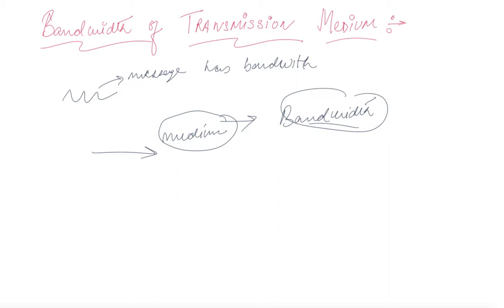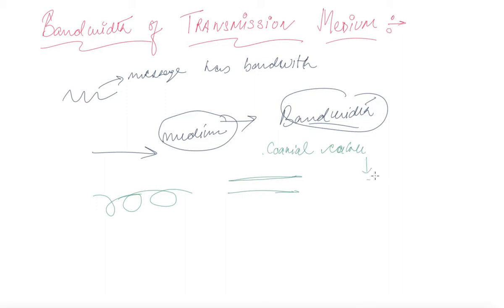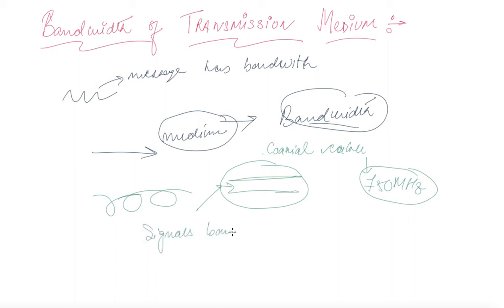Say suppose you have an electrical wire or an optical fiber cable where you are sending information. For a coaxial cable, it offers a bandwidth of around 750 megahertz. When sending a message through a medium, the signal's bandwidth should come in between the medium's bandwidth — it should be within proportion.